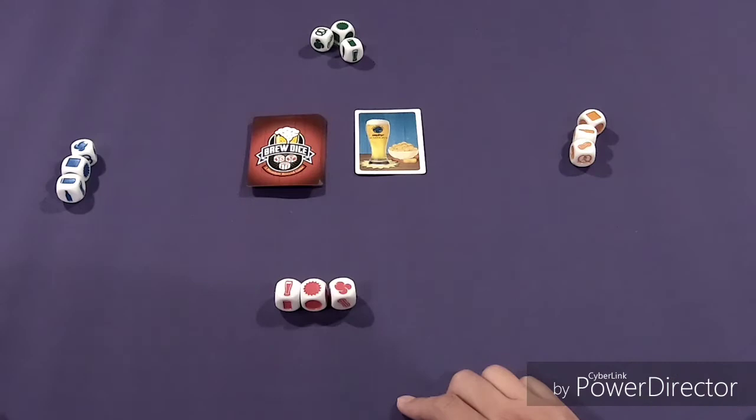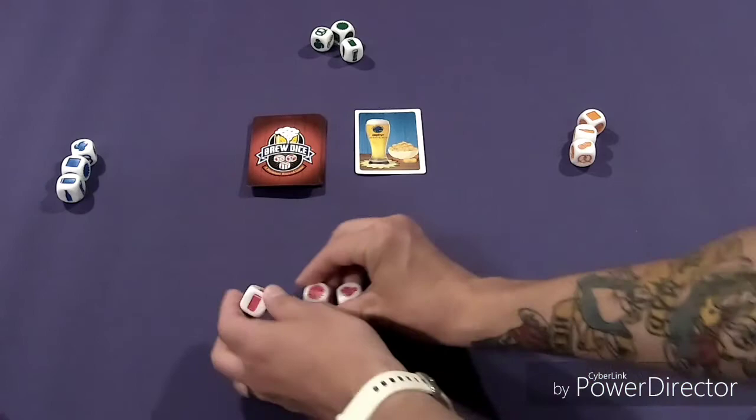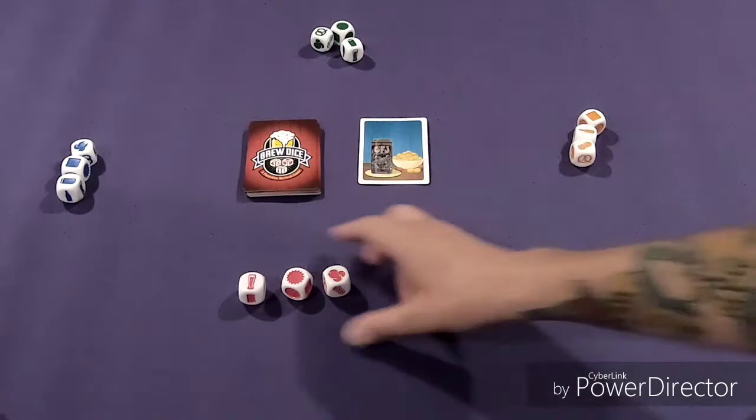Zoom this in a little bit. So if I rolled popcorn instead of peanuts, which I need, and I tried to claim this card and it was wrong, what would happen is this would go back into the deck on the bottom, this card would come out, these players would resume, and I would have to sit out for this card.